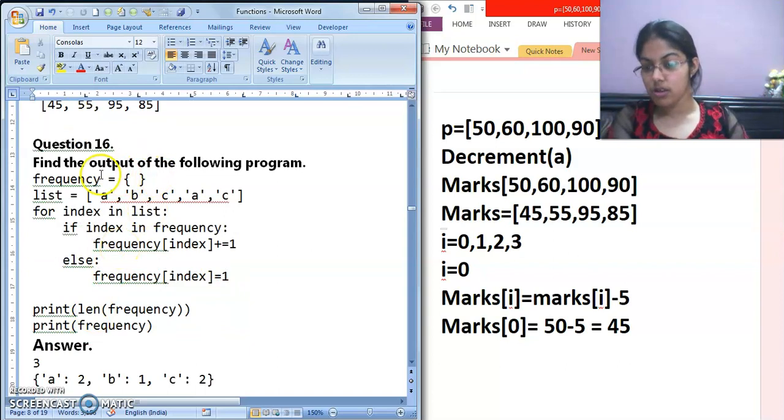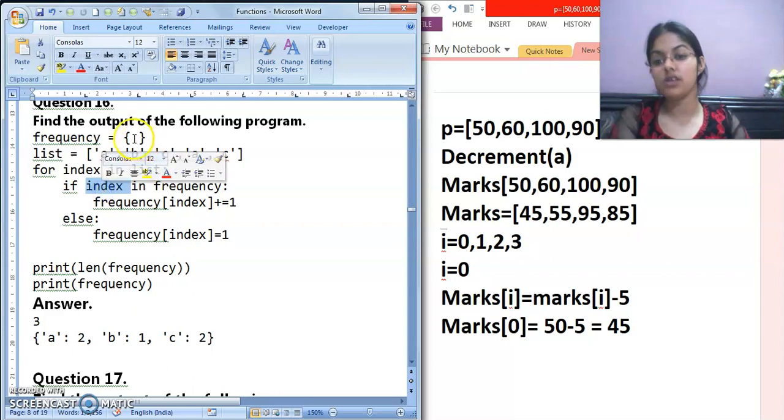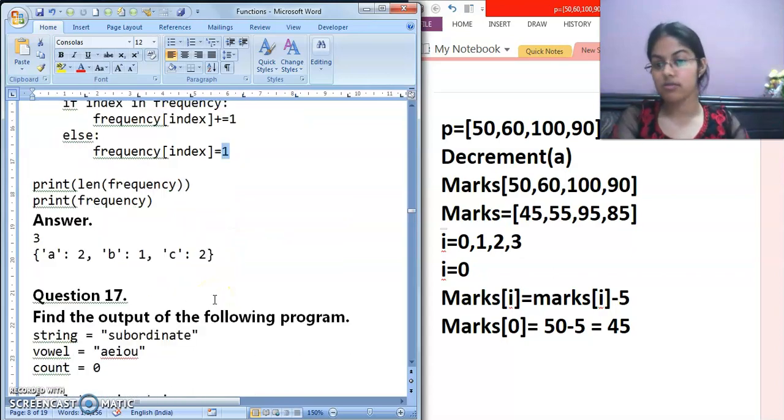This is the easiest one. This you can do. See, what you have in this? A dictionary is given and a list is given. For index and list. That means, index mein value kya hai? A, B, C, A, C. Now first value A. Frequency of A. What to do? Plus 1. That means, the frequency dictionary, in that key A will be there, and its value will be 1. Then next time B, if B in frequency, condition true. So frequency B, and its value will be 1. Same for C. Now when A comes again, if index in frequency, that means A in frequency. Now A is already in frequency dictionary. So else part will execute. Frequency index, that means A equals to... This is how your loop will execute.